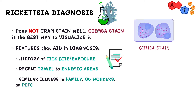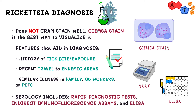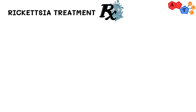In the lab, you can diagnose rickettsia using either nucleic acid amplification tests to amplify and detect bacterial DNA, or by serology, including rapid diagnostic tests, indirect immunofluorescence assays, and ELISA. After assessing a patient's signs and symptoms, clinical history, and laboratory test results, all of these can help guide decisions regarding the treatment of rickettsial disease.